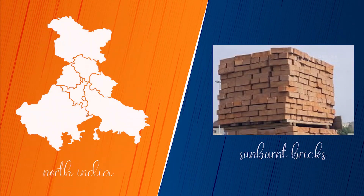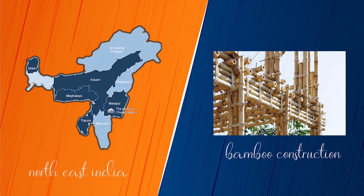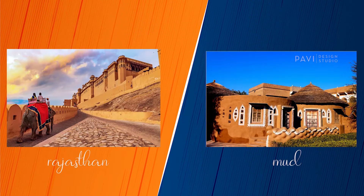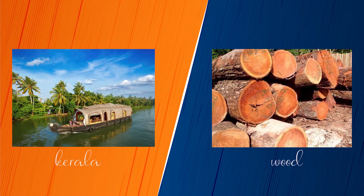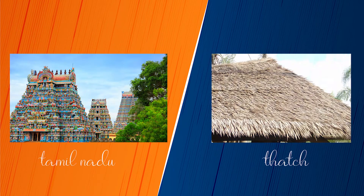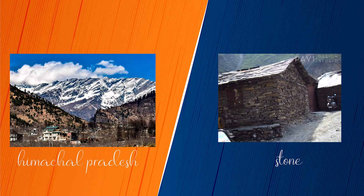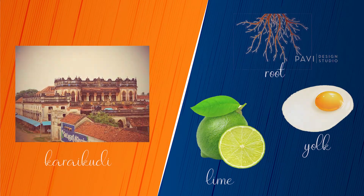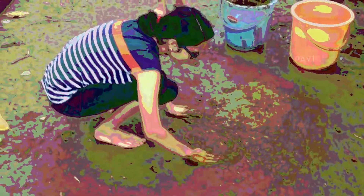Natural materials: In Goa and Karnataka, red laterite stone is used. In north India, sun-burnt bricks; in the northeast, bamboo construction; in south India, Mangalore tiles. In Rajasthan, mud; in Kerala, wood; in Tamil Nadu, thatch; in Himachal Pradesh, stone. In Chandigarh, bamboo. In the south region, Karakuti — the walls are plastered over by a secret recipe of roots, egg yolk, and lime that leaves them silken smooth and washable. In Kerala, the flooring was beaten earth polished with cow dung at regular intervals, with smoothness achieved by polishing with a particular variety of banana.